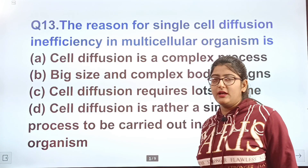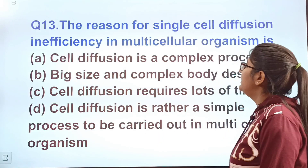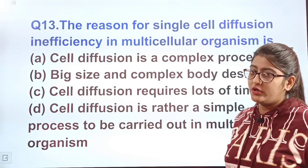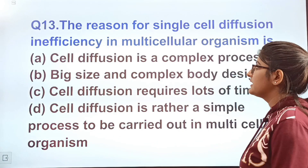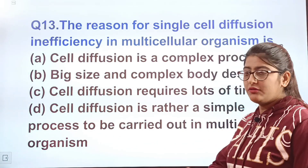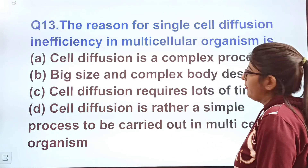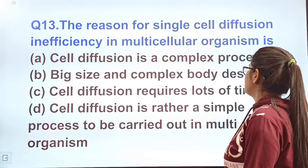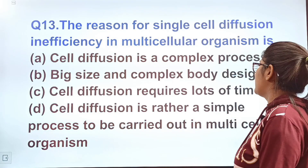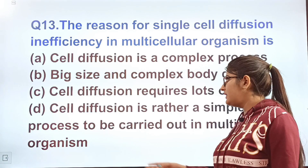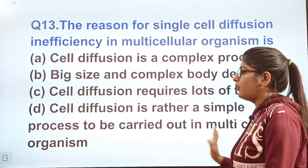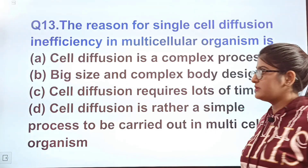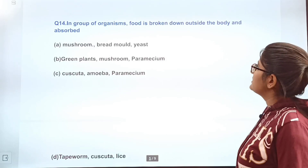Question 13: What is the reason for single-cell diffusion being inefficient in multicellular organisms? Option A — cell diffusion is a complex process; option B — because of the big size and complex body designs; option C — because cell diffusion requires a lot of time; option D — cell diffusion is rather a simple process to be carried out in a multicellular organism. Write the correct answer in the comments.